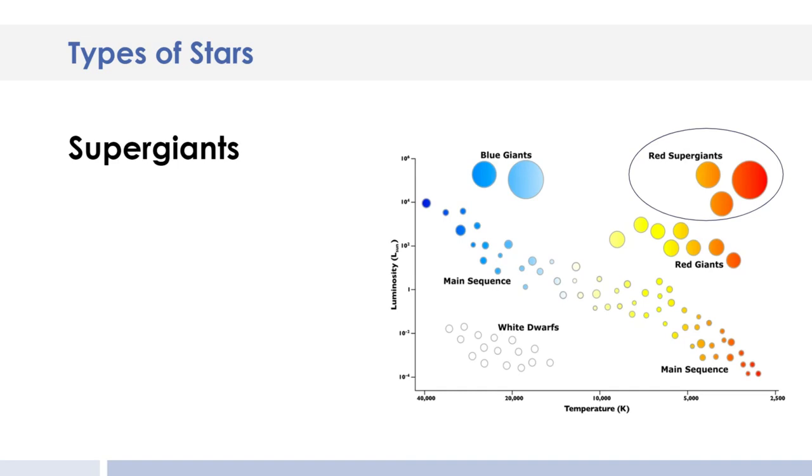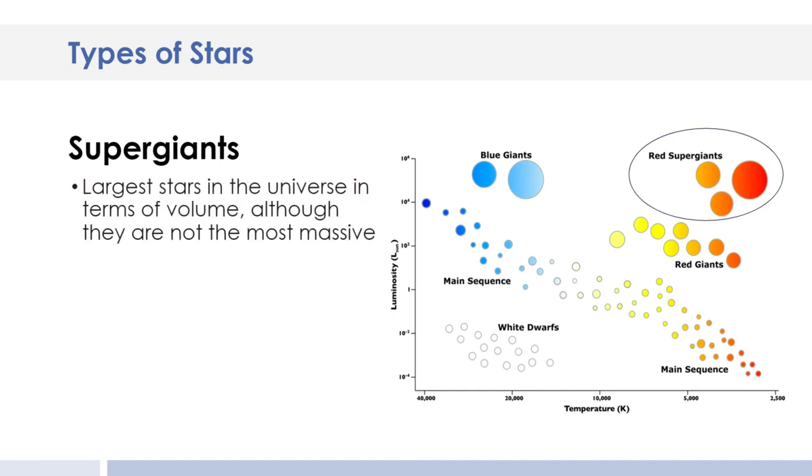Our third group is the red supergiants. They are going to be stars. But they're very big, so that makes them very bright. And when I say they're big, I mean they're big in volume, not big in mass. You don't really have to know that. It's just kind of a fun fact.